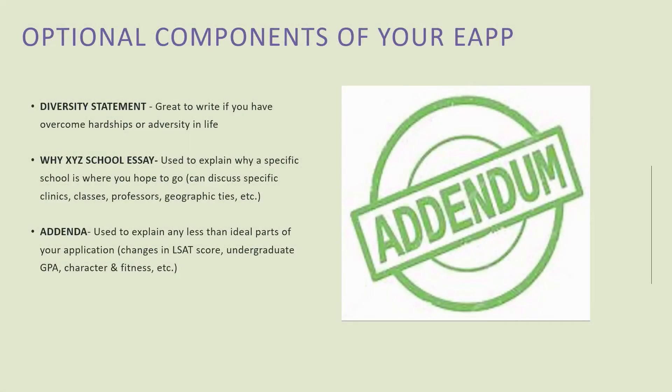Typically, students will write an addendum when there is something that they want to explain, such as less than ideal undergraduate grades, not doing as well on the LSAT as they were expecting to, or any other blemishes in their file. The key thing to know about LSAT and grade explanation addenda is that schools rarely perceive what you write as you making excuses — rather, they view what you write as providing important context.